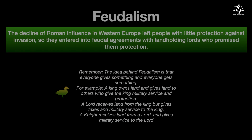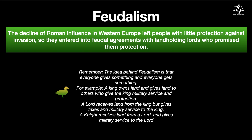This brings us to a big vocabulary word: feudalism. The decline of Roman influence in western Europe left people with little protection against invasion, so they entered into feudal agreements with land-holding lords who promised them protection. The idea behind feudalism is that everyone gives something and everyone gets something. A king owns land and gives it to others who give military service; a lord receives land but gives taxes and military service to the king; a knight receives land from a lord and gives military service; and at the bottom you have serfs.